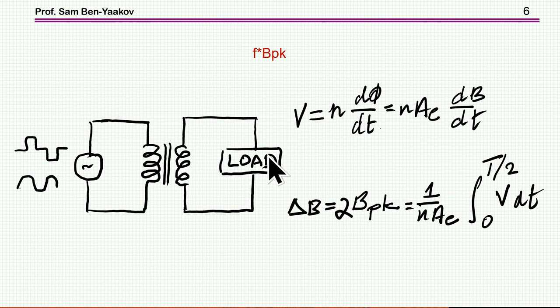Let me start the answer to the riddle by first considering this product, F times B_pk. Now we know that from Faraday's equation that V is n d phi dt. This is the flux and B is the flux density. And they are related by the area, cross section area, from which we get the delta B that is from peak to peak or twice the B peak is 1 over N A sub B. N is number of turns. A sub B is the cross section area and integral from zero to half the period.